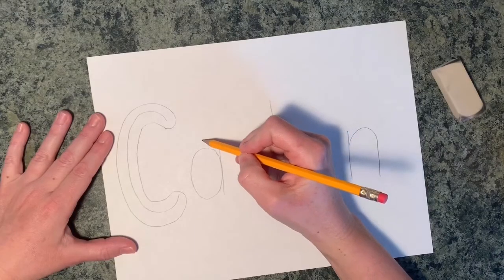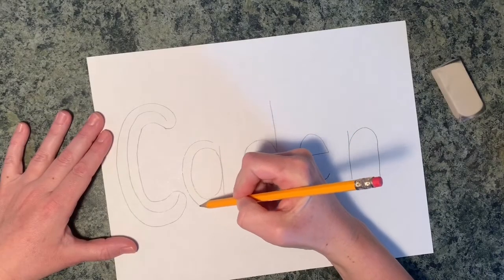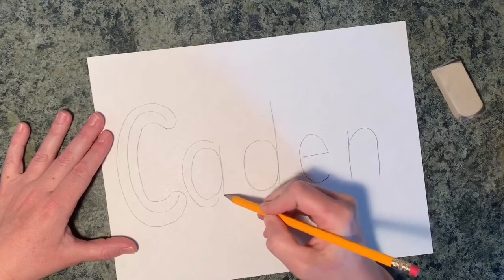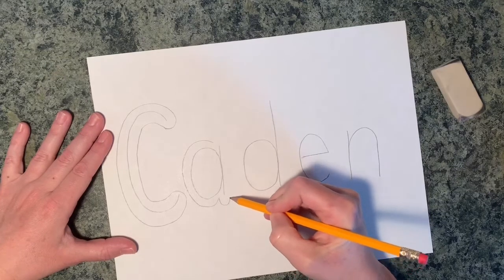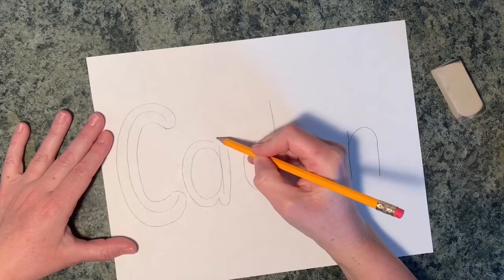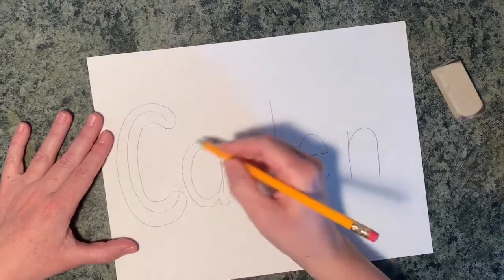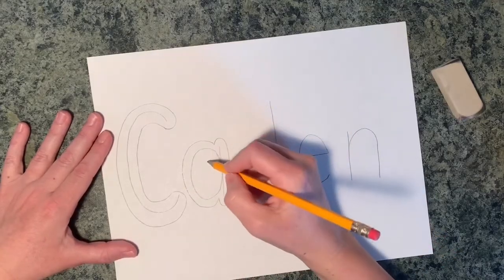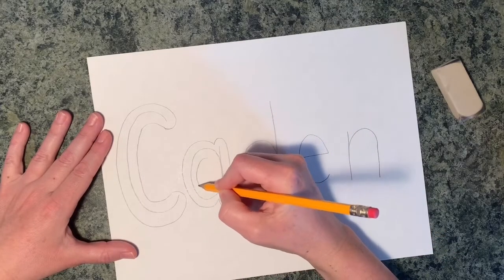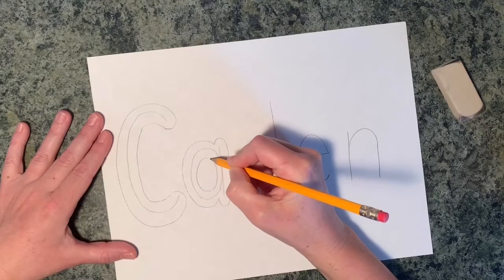So here we're going to go ahead and do that. We do one around the A and when you come to these extra lines here just go around it too. There you go. So we've got the outside line but we also have an inside line we have to do and this is where the inside line is. Right in there.